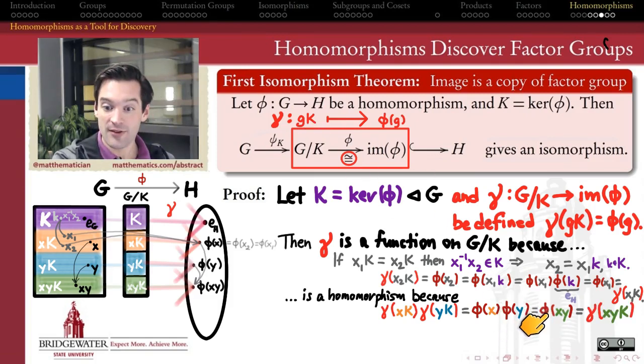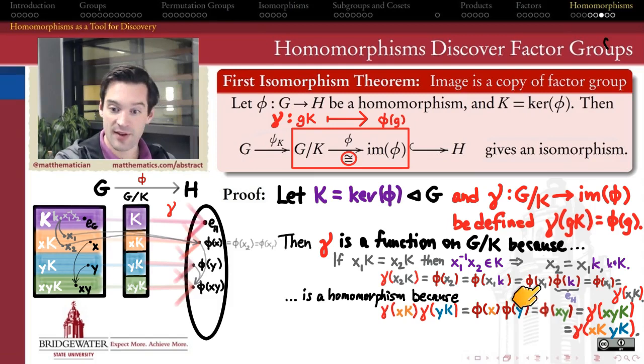But by our definition of gamma, this is equal to gamma applied to the product coset XYK. So gamma is sending XYK, that coset to the same place that the product of phi of X and phi of Y are going to. But on the other hand, because K is a normal subgroup, we know every kernel of a homomorphism is a normal subgroup, XYK is the same thing as XK times YK. And therefore, gamma of the product of these cosets is the same as the product of gamma applied to those cosets. So gamma is a homomorphism.